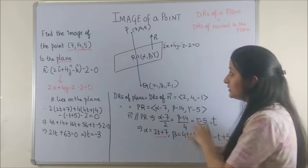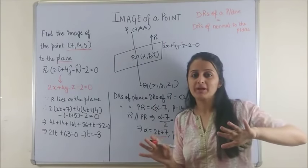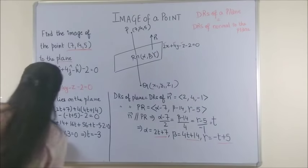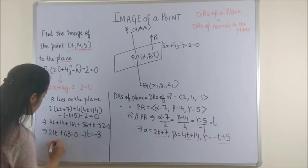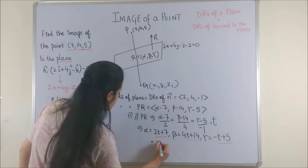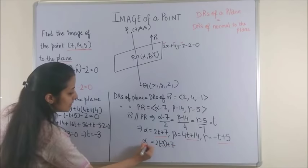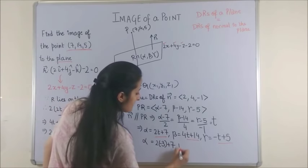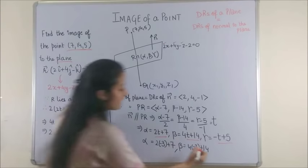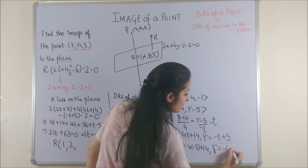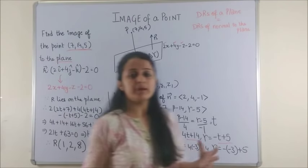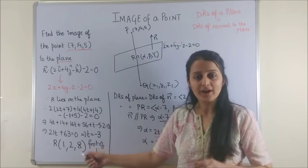You know when you substitute for T you get α, β, γ which is the foot of the perpendicular and then you can use your midpoint formula to get the image. So this means my coordinates for R, if I substitute my T here it is 2(-3) + 7 that gives me my α as 1. Next β is 4(-3) + 14 which gives us 2. Next my γ is -(-3) + 5 that gives us 8. So foot of the perpendicular for the given point becomes the point (1, 2, 8).